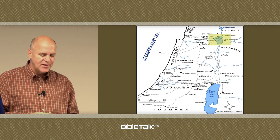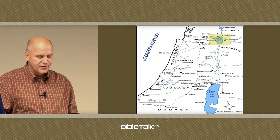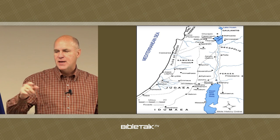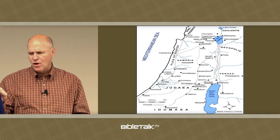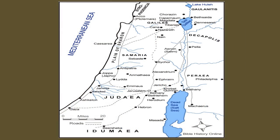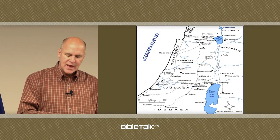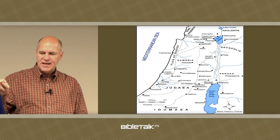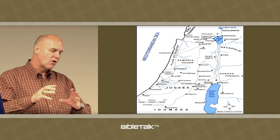The Sea of Galilee had lots of activity. Most of the apostles were fishermen in that sea and they crossed it many times — instead of walking around, they would take a boat from one side to the other. Cana is just above Nazareth near the Sea of Galilee — that's where the first miracle was done at the wedding, the turning of water into wine. Decapolis is a little to the bottom right of the Sea of Galilee — that's where Jesus healed the demoniac, the man possessed by many demons. Decapolis means "ten cities."